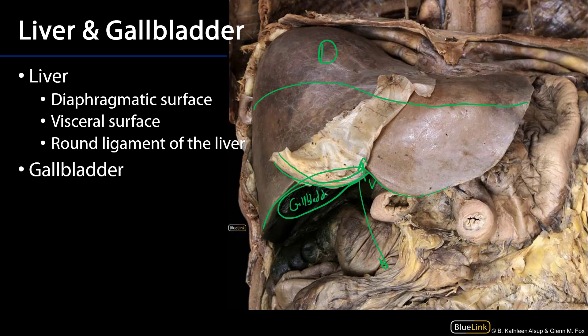The gallbladder here is its typical dark green shade. It's stained green from the biliverdin, which is the oxidized form of bilirubin. Those are the two pigments of bile.